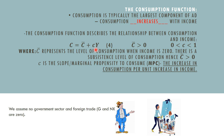You might ask yourself: what happens to the other 0.2 of that additional rand, or 20 cents? It will be saved. So the 0.2 would be the marginal propensity to save.